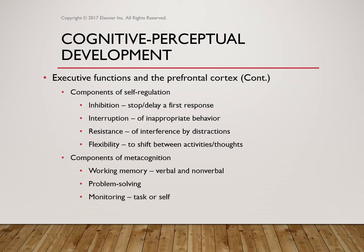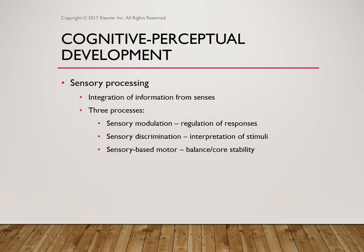When we look at components of metacognition, we look at working memory — verbal and nonverbal. What do you remember? What was said, or facial expressions, or how they were standing? We look at problem solving, how they monitor tasks or themselves. We look at sensory processing — the integration of information from senses: taste, touch, feel, smell, what they see. Sensory modulation is the regulation of responses; you see this a lot with autistic kids, who don't do well in high-sensory situations. Sensory discrimination is the interpretation of stimuli. Cognitive perceptual development delays can lead to decreased discrimination and decreased sensory-based motor function, balance, or core stability.